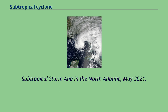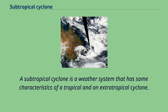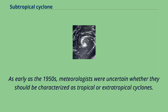Subtropical Storm Anna in the North Atlantic, May 2021. A subtropical cyclone is a weather system that has some characteristics of a tropical and an extratropical cyclone. As early as the 1950s, meteorologists were uncertain whether they should be characterized as tropical or extratropical cyclones.